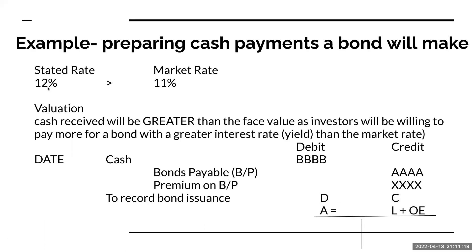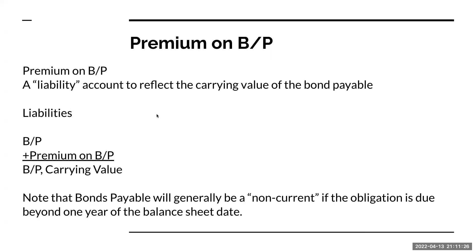If the stated rate is higher than the market rate, people will want my bond and it's going to sell at a premium. Note that bonds payable is also going to be a non-current liability if the obligation is due one year or beyond the balance sheet date.